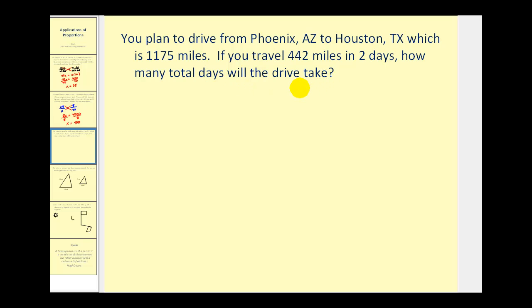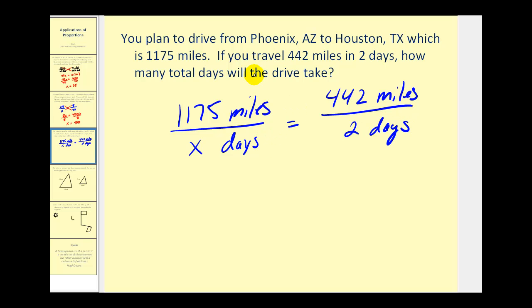We're going to compare miles to days for our two rates. So the first rate will be 1,175 miles to the total number of days, which we don't know. So we'll say x days must equal the rate of 442 miles per two days. And of course this problem does assume that we would travel at a constant rate per day.